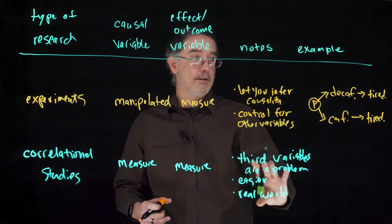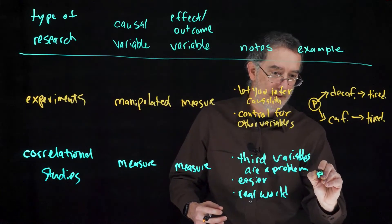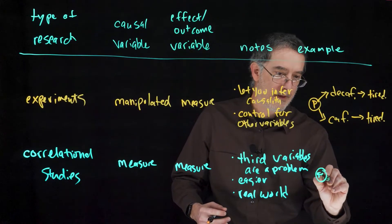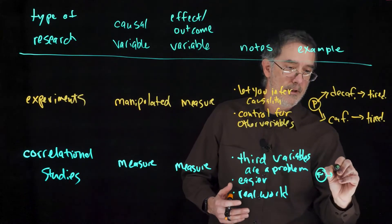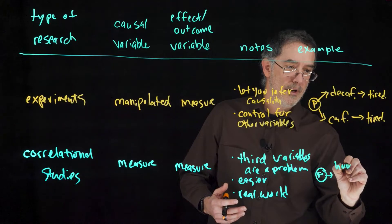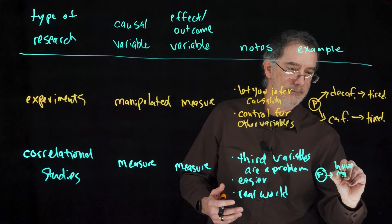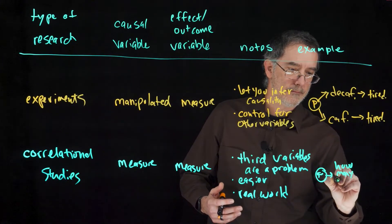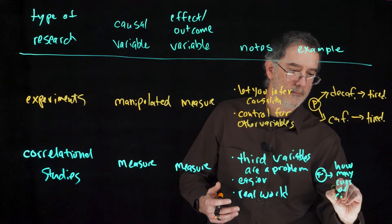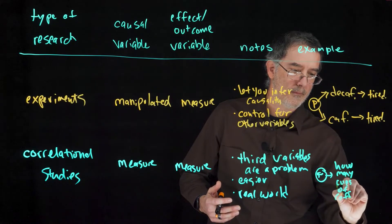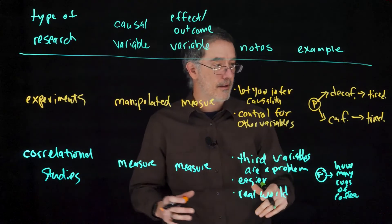With a correlational study, we might have our participants come into the lab, and then we would ask them how many cups of coffee they drank — or more generally, how many cups of caffeinated beverage, something like that.